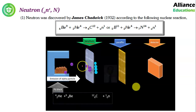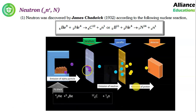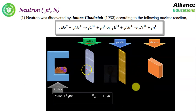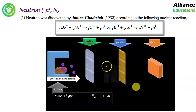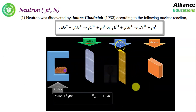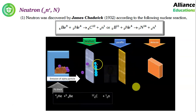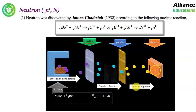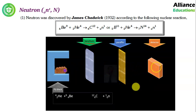You can see here the alpha particles are bombarding the beryllium sheet, from which an electrically neutral particle is being emitted. Initially in the experiment, a paraffin sheet was not placed there — there was a direct detector. But the detector was showing no reading because the detector could only detect charged particles like electrons or protons.